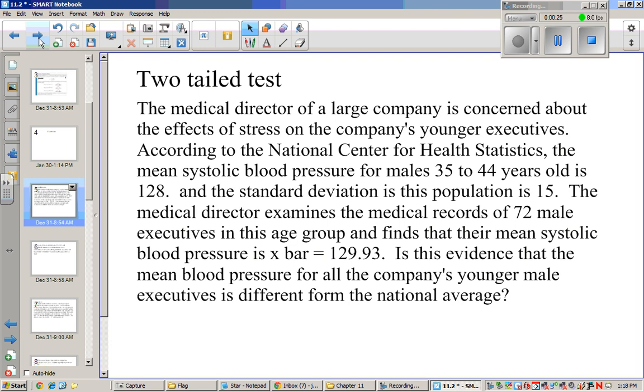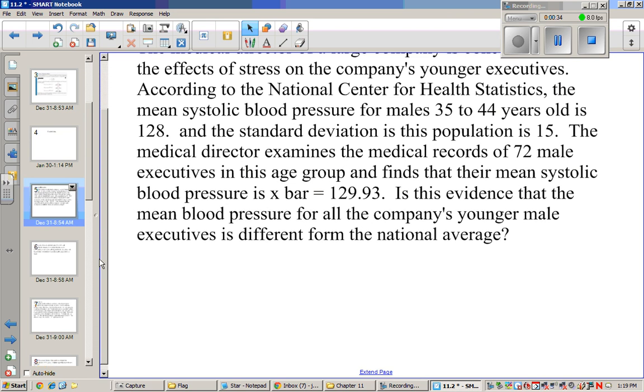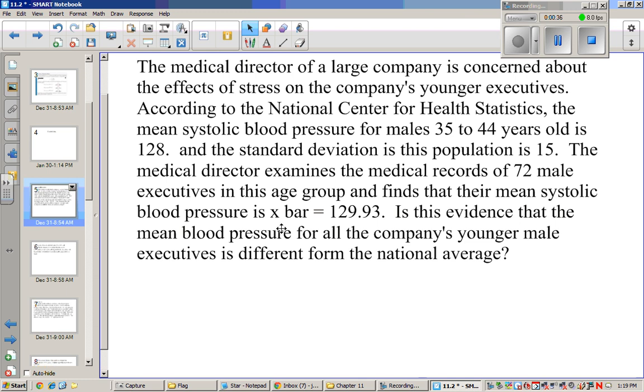The medical director examines the medical records of 72 male executives in this age group and finds their mean systolic blood pressure is x̄ = 129.93. Is this evidence that the mean blood pressure for all the company's younger male executives is different from the national average?